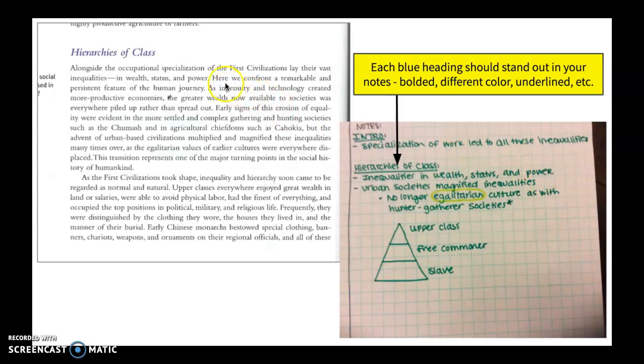The next thing it says in here is as ingenuity and technology created more productive economies, the greater wealth now available to society piled up rather than spread out. But the advent of urban based civilizations multiplied and magnified these inequalities many times over as the egalitarian values of earlier cultures were everywhere displaced. This transition represents one of the major turning points in the social history of humankind.